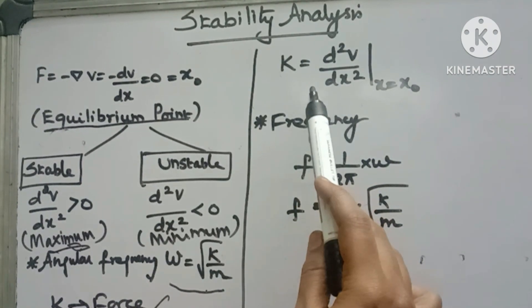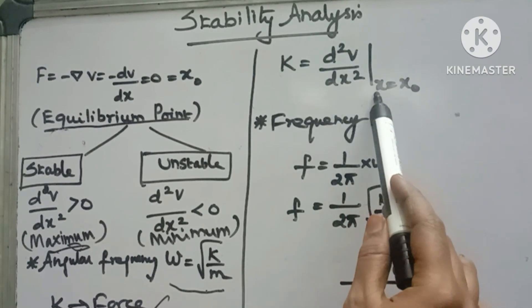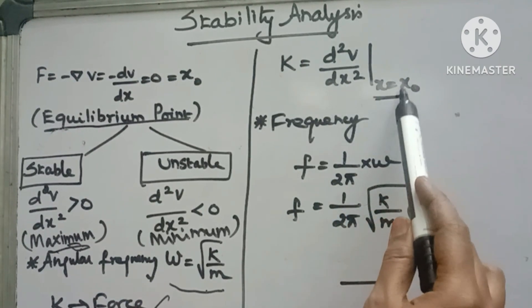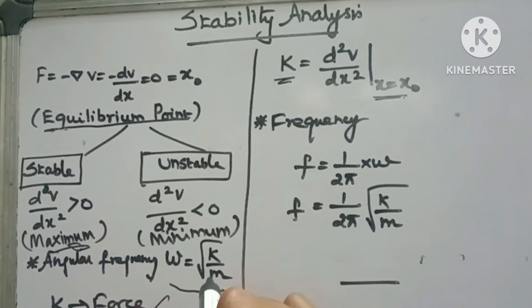Force constant k = d²V/dx². In this term, we substitute the equilibrium point. We will get the k term, and then k divided by M under square root gives the angular frequency term.